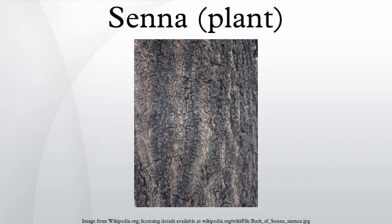Systematically, Chamaecrista, Cassia, and Senna form a monophyletic group which some authors have called Cassia sensu lato. In 1982, the group was named Cassianae and classified as a sub-tribe of the tribe Cassiae. The tribe Cassiae contains 21 genera and is now known to be polyphyletic, but the classification is still accepted because a revision of Fabaceae has yet to be published. The genus Senna has had a complex taxonomic history.